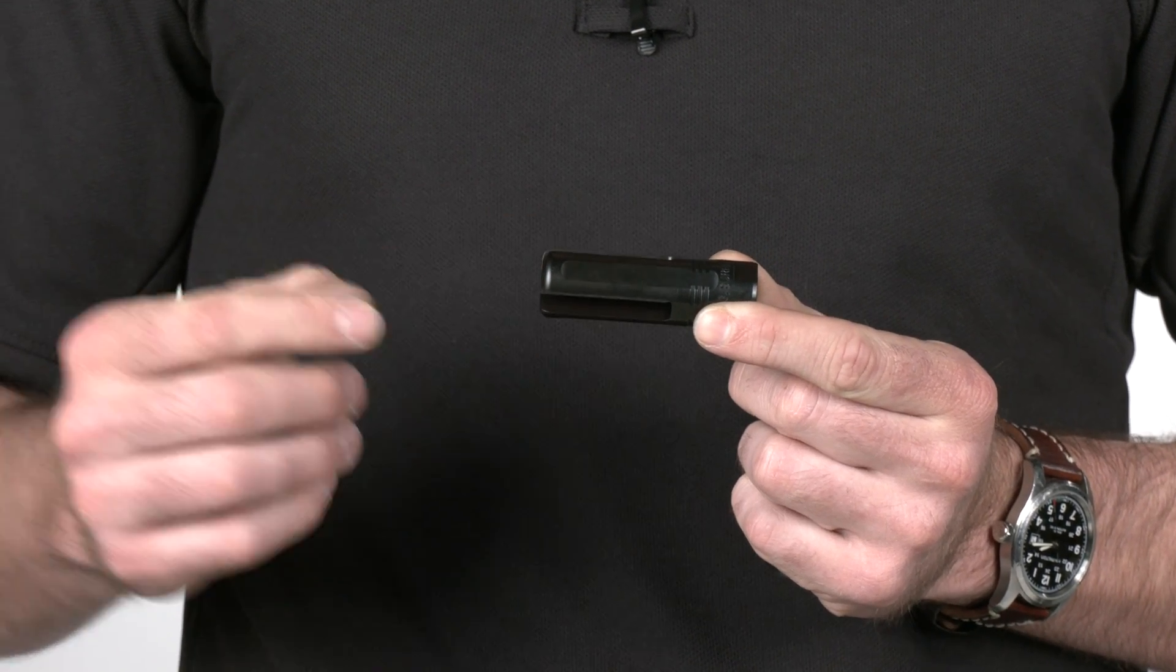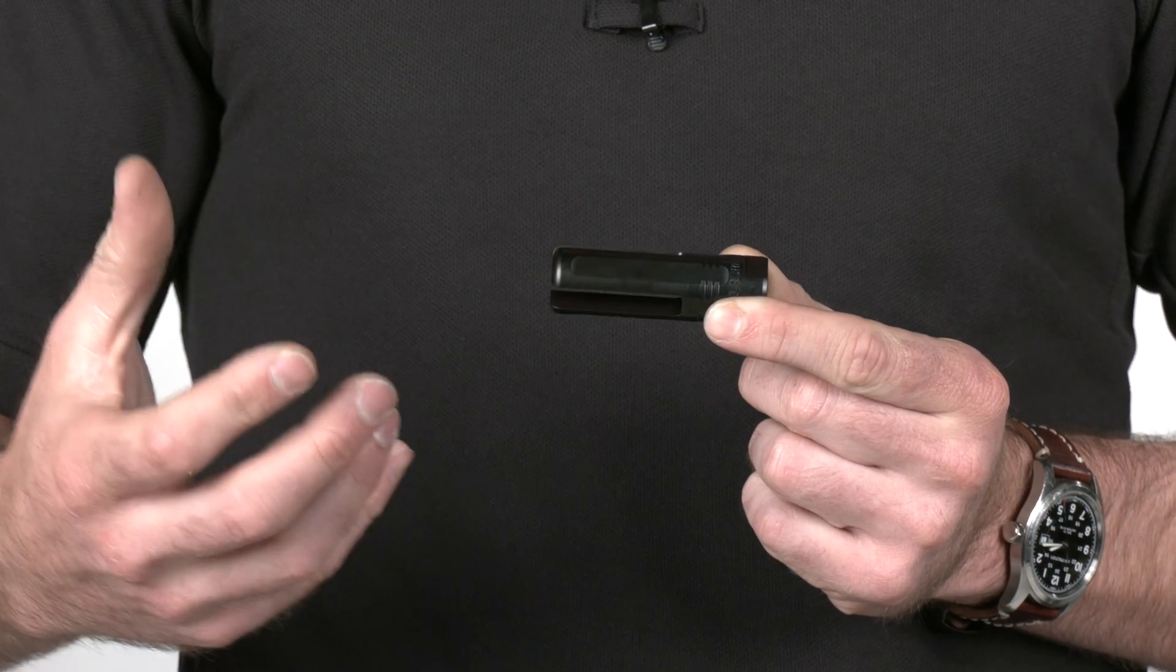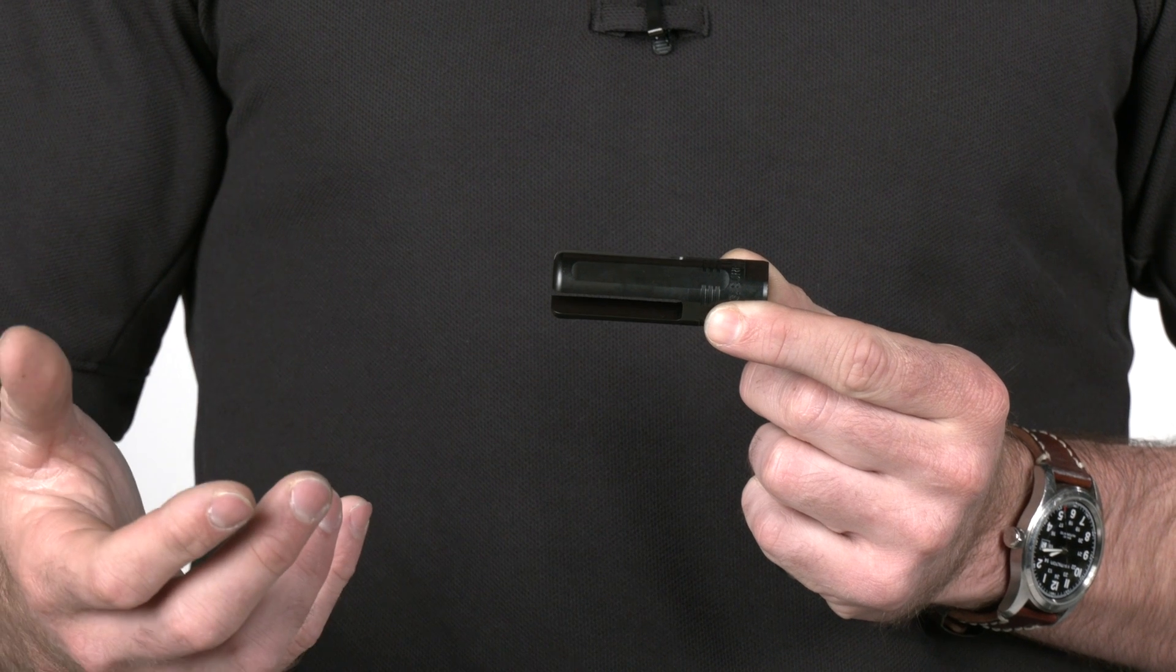So this is a flash hider. You might be familiar with our SF3P flash hider, which is a SOCOM series suppressor adapter. Those are extremely precision machined to make sure that the suppressor adapter interface is very precise and you have minimal impact shift.